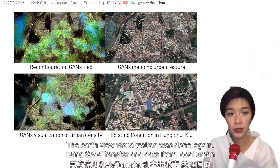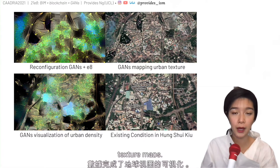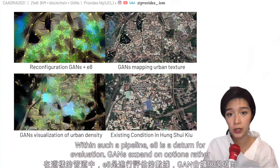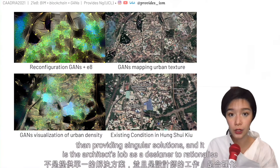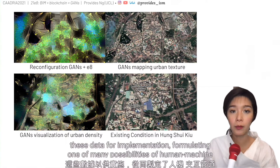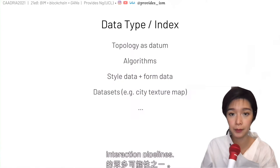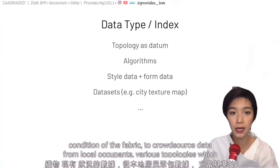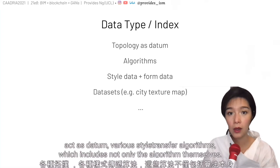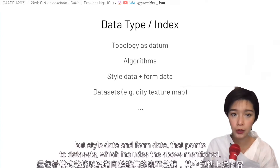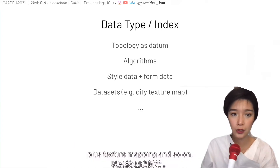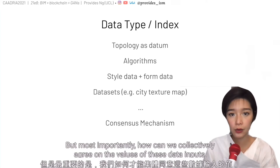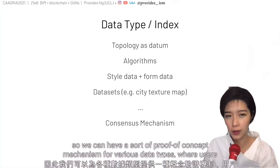The earth-view visualization was done using style transfer and data from local urban texture maps. Within such a pipeline, E8 is a datum for evaluation, and GANs expand on options rather than providing singular solutions. It is the architect's job as a designer to rationalize these data for implementation, formulating one of the many possibilities of human-machine interaction pipelines. From these results, we can identify the information needed to be ranked: data on existing conditions of the fabric, crowdsourced data from local occupants, various topologies acting as datum, various style transfer algorithms — including not only the algorithm itself but style data and form data — training datasets including texture mapping. Most importantly, how can we collectively agree on the values of these data inputs to have a proof-of-concept mechanism for various data types, where users can assess the visibility of these crowdsourced contents?